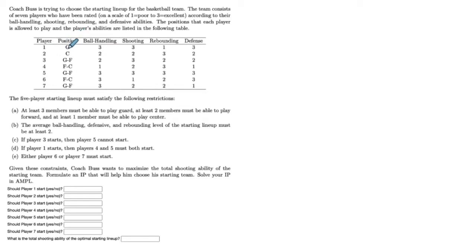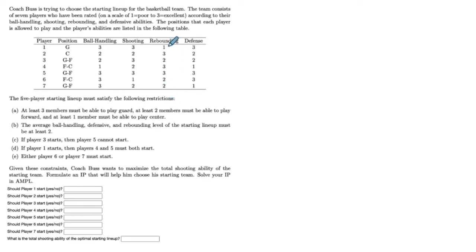For example, player one can only play guard, player two can only play center, player three can play either guard or forward, and so on. A basketball lineup consists of five players, and there are five other conditions we need to satisfy. Given all these constraints, the coach wants to maximize the total shooting ability of the starting team. We want to formulate this problem as an integer program and solve it in AMPL. The shooting ability is given in this column, and this is a typical situation where we need to select a set of options among available alternatives subject to certain requirements.